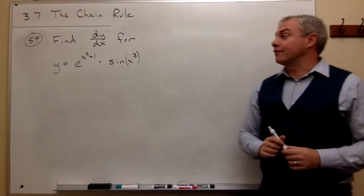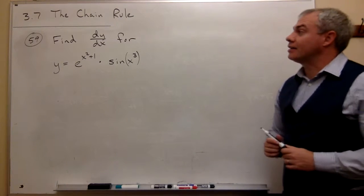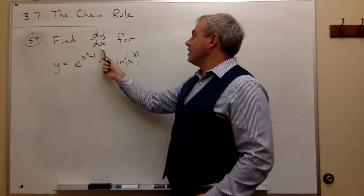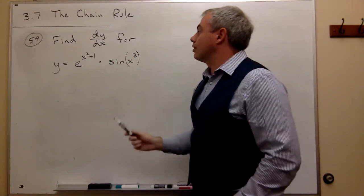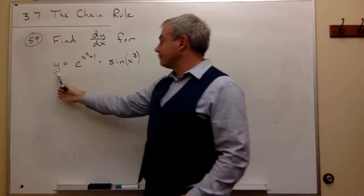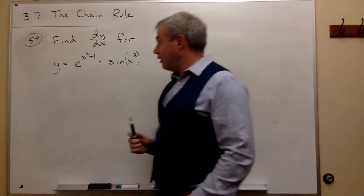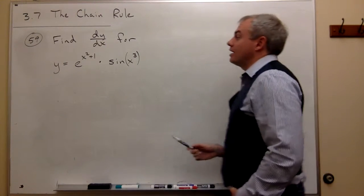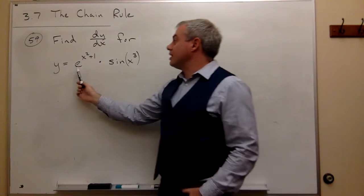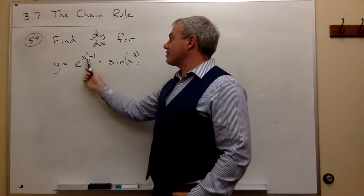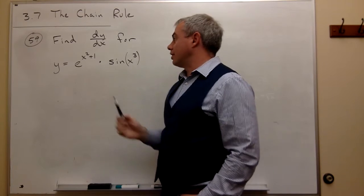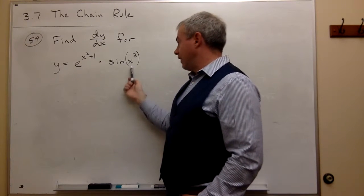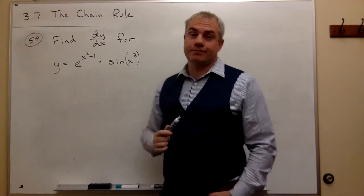In problem number 59, I want to find dy/dx for the following function y. y is equal to e to the x squared plus 1, times sine of x cubed.